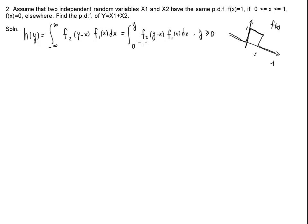How should we approach this? We need to look at the y parameter. It all depends on how large y is — whether y is greater than 1 or less than 1, the function is different. Because if y is greater than 1, then that part is going to be 0. So naturally we consider whether y is less than 1 or greater than 1. First, if y is less than 0, h(y) is always going to be 0.